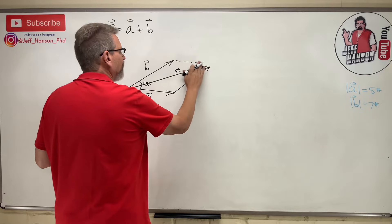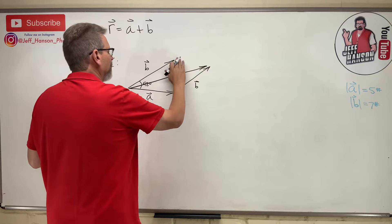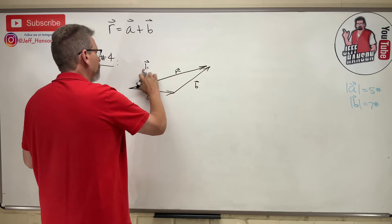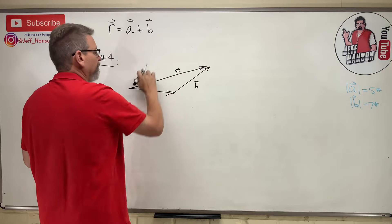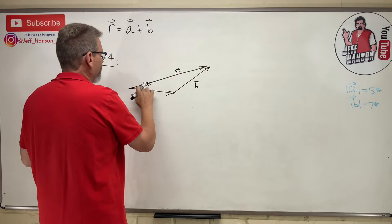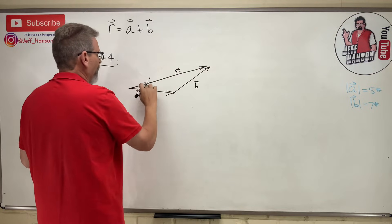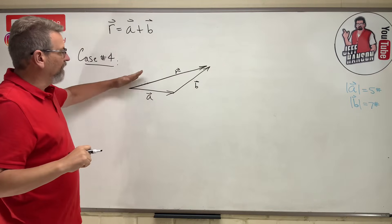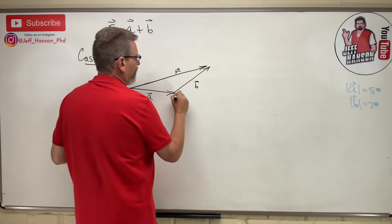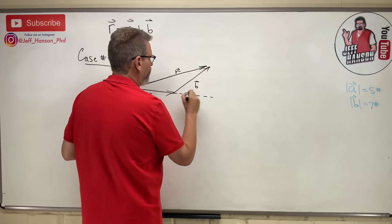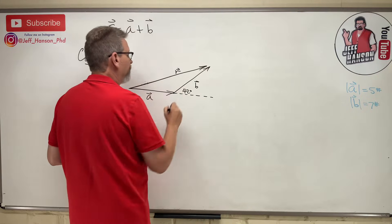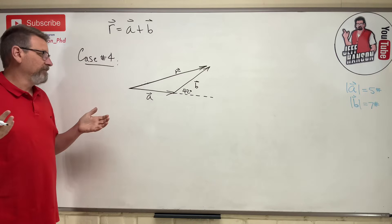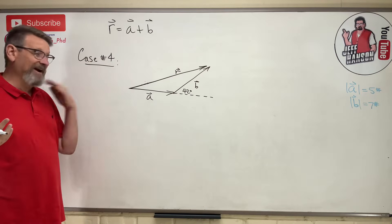I'm going to erase some of the diagram to clean it up. The 42 degrees was measured from vector A up to vector B, so that angle is actually over here in the triangle now. We've got a wacky triangle, so we're going to have to remember some trig things.